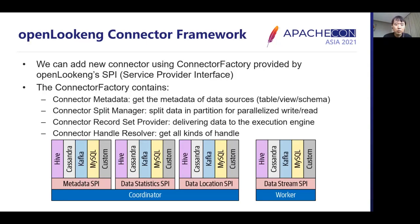OpenLooker's connector API contains interfaces to get metadata, get all kinds of handles, split data from data sources into partitions, and deliver data to the OpenLooker execution engine. It provides a service-provider interface for developing new connectors, making it easy to add connectors for new data sources.